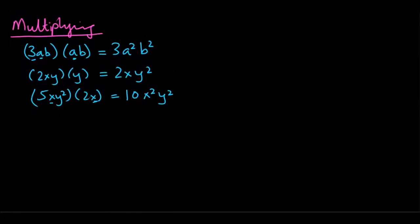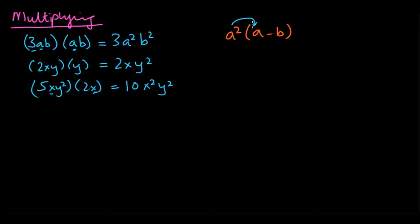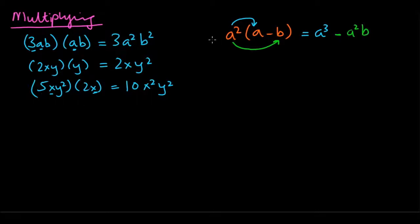Now let's look at the scenario where you multiply a single term by something with two terms. Say we have a squared times (a minus b). You multiply the outside term by the first term in the bracket: a squared times a gives a cubed. Then multiply the outside term by the second term: a squared times negative b gives negative a squared b. One at a time — that's how we do it.